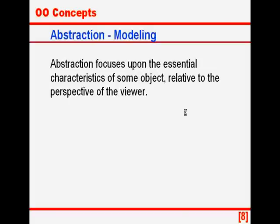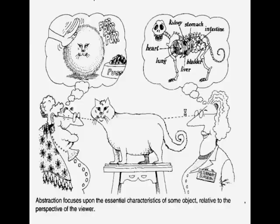Abstraction focuses upon the essential characteristics of some object relative to the perspective of the viewer. This definition is from the classic book by Grady Booch, and this is a picture which accompanies it. It is the same cat but from the viewpoint of the owner — the old lady on the left — she sees it as a cute little fur ball. But from the viewpoint of the veterinary surgeon on the right, the cat has parts like kidneys, intestines, bladder, liver, etc. So the two people have different abstract models of the same cat.